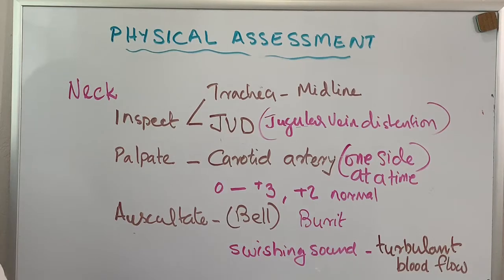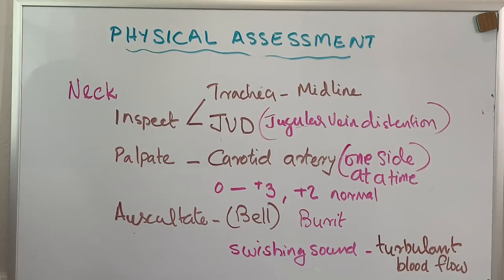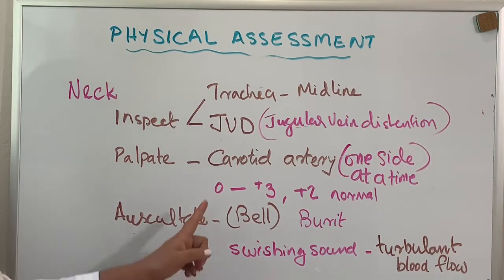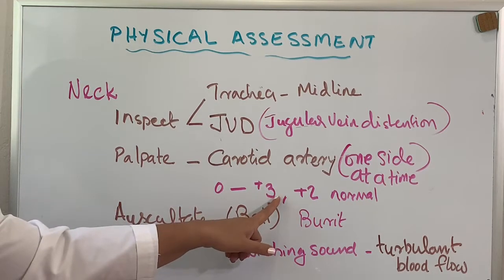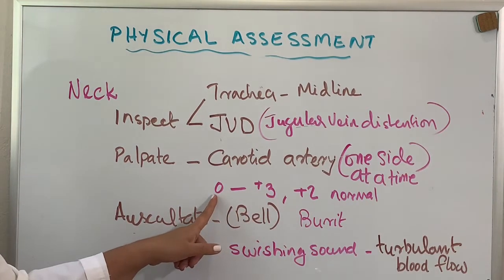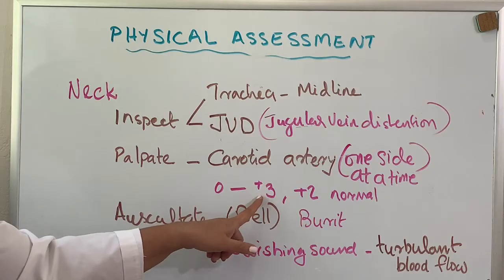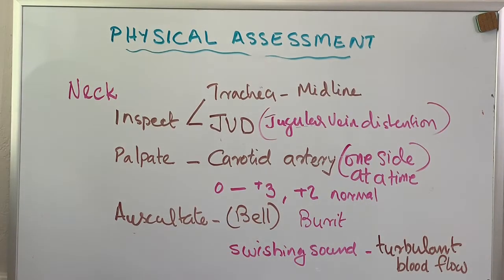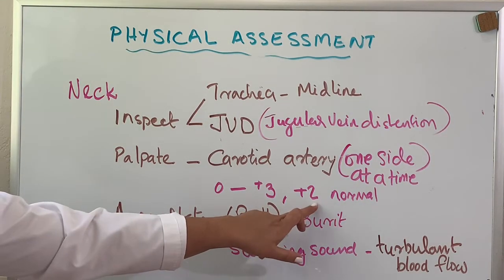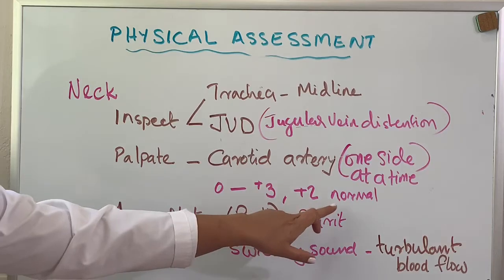Then you are going to palpate the carotid artery. Always make sure that you palpate one side at a time. If you palpate both sides together, that can completely block the circulation to the brain. You expect between 0 and +3: 0 means absence of pulse, +3 is a bounding pulse. We expect +2, which is the normal pulse.